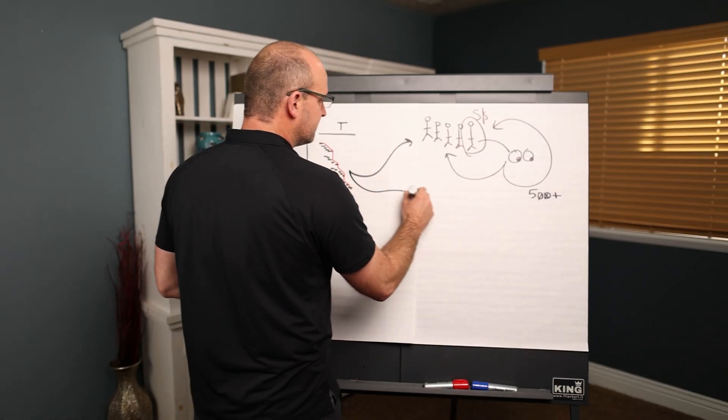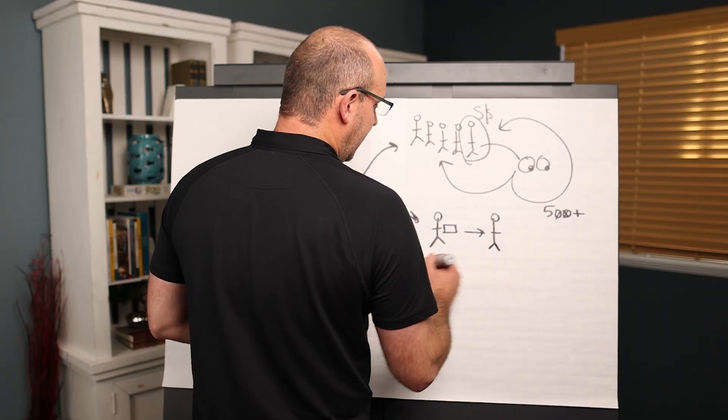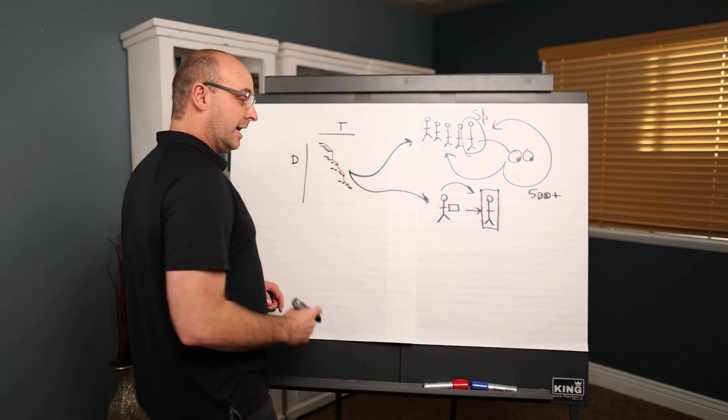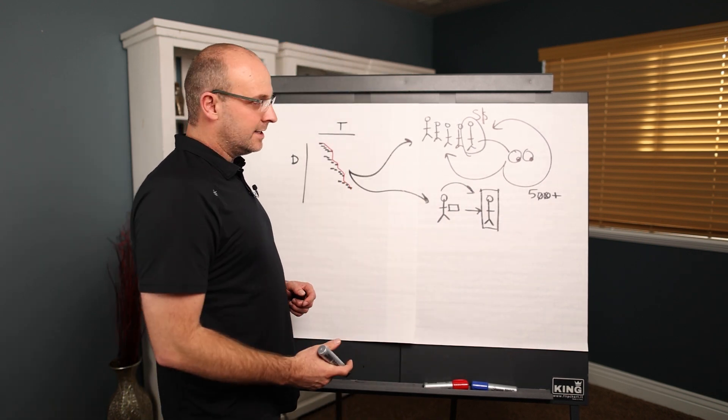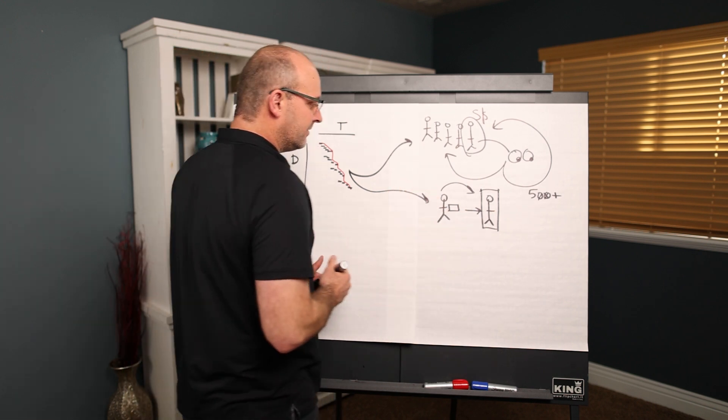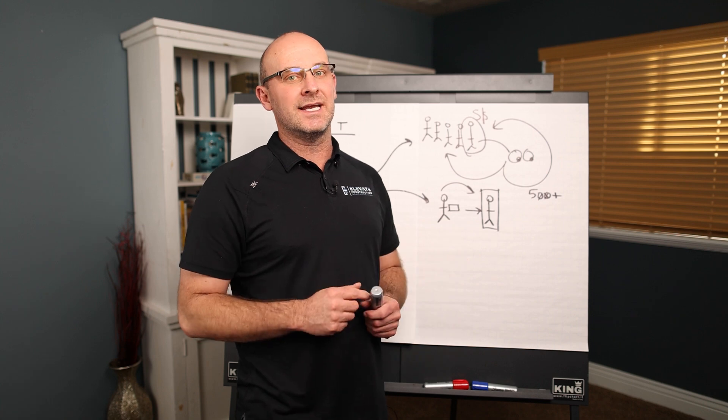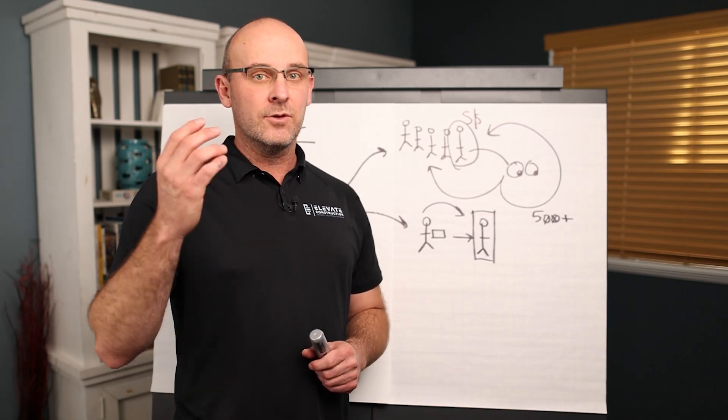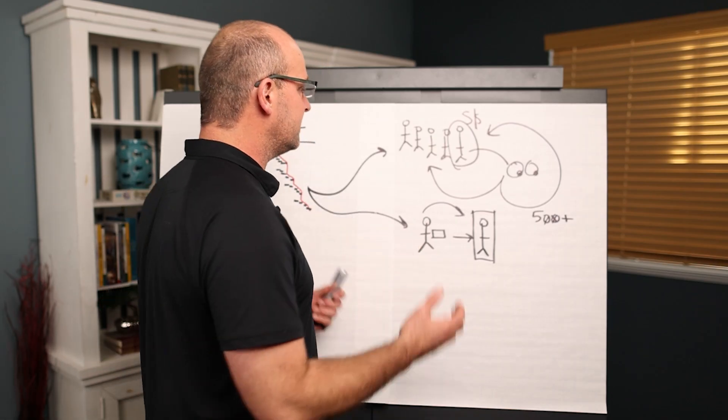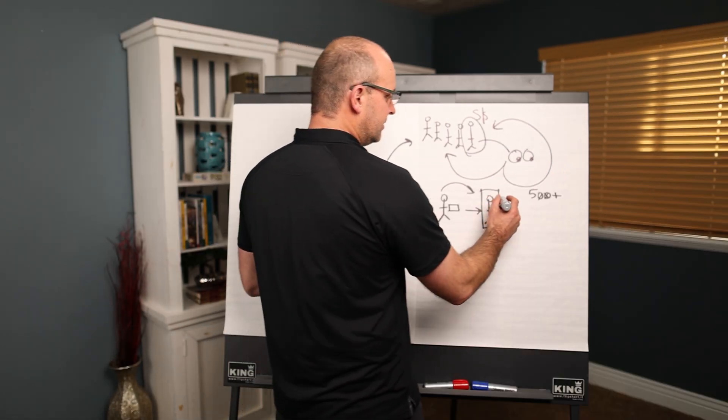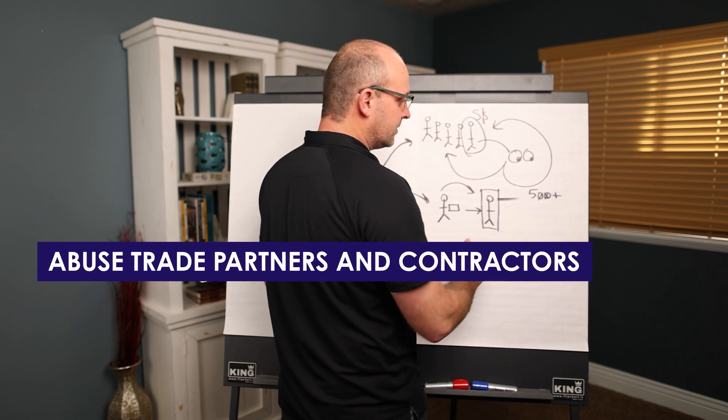Another way that CPM disrespects people is that when you have this schedule, it's just given to trade partners, and it's forced on them, and they're controlled and put in a box and told, hey, you have liquidated damages, you have to follow this, this is our plan, let me give it to you. Not only does CPM only have a 15 to 40% hit rate, not only is it not a collaborative plan, not only is it not a realistic plan, not only is it not a plan that you can see, but it's being shoved down the throats of trade partners, and it's used to abuse trade partners and contractors,